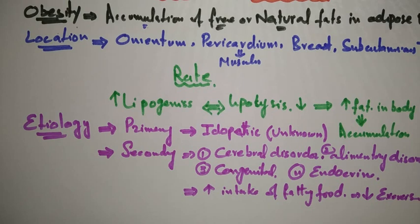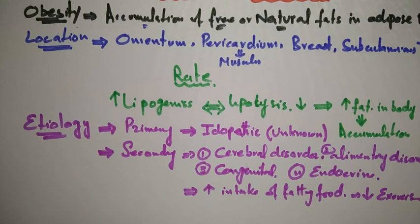So now we have covered the definition of obesity, the locations where fat accumulates, the process, and the etiology. Next, we discuss how you can measure obesity — or in other words, how you can find out if a person has obesity.